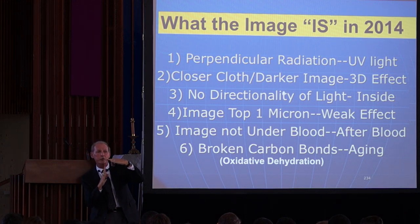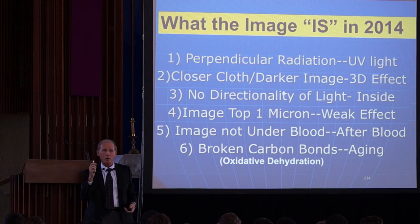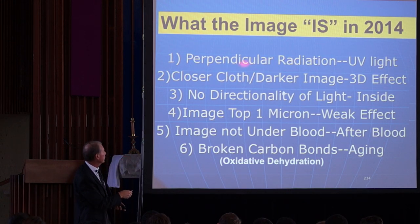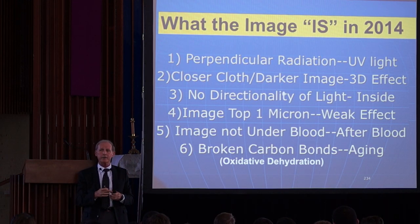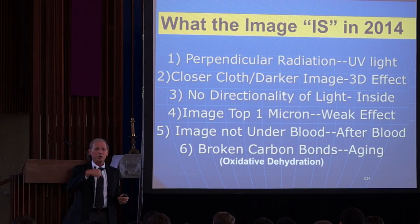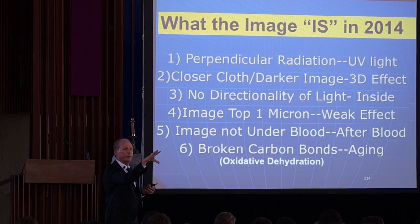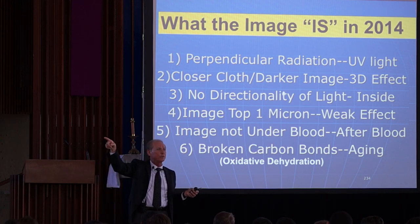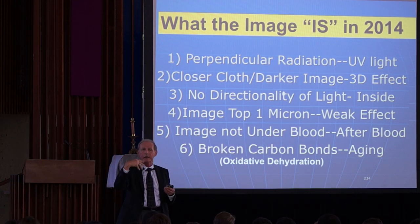Just like a photograph, you have to have a photographic plate and light has to hit it straight — light cannot hit it at an angle. So we know for a fact the radiation that hit the cloth was perpendicular. We know the closer the cloth is, the darker the image. We know there's no directionality of light. When you take a picture of a person in a room, you always know where the light is — the sun's over here, something is lighting up the person.